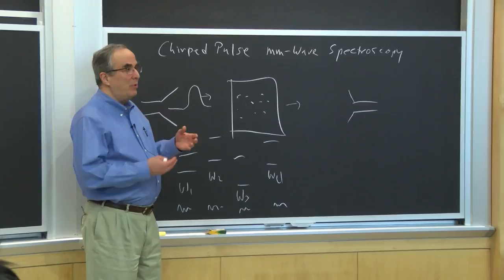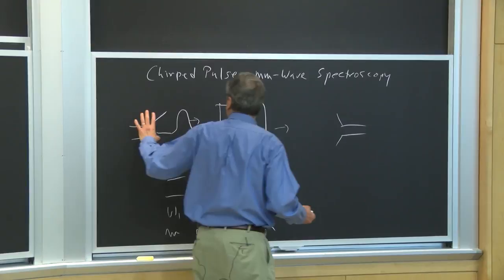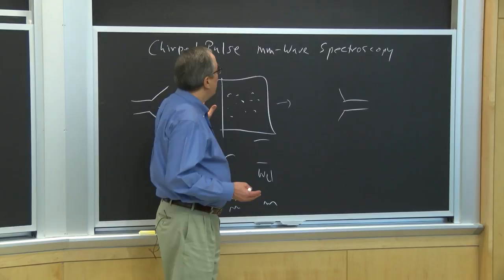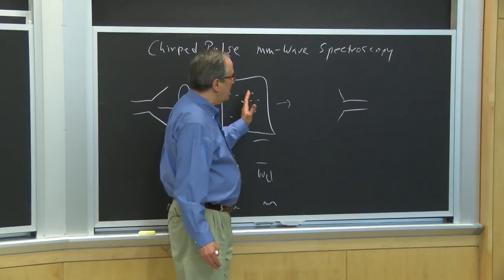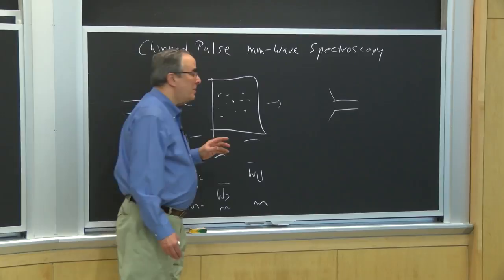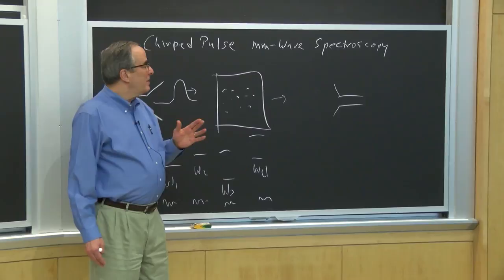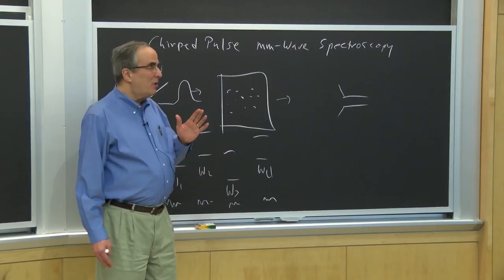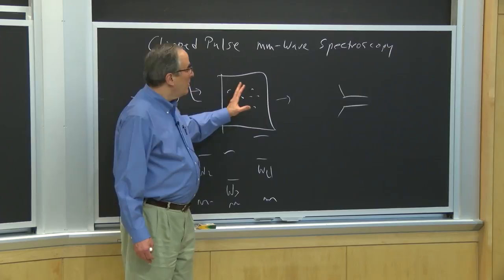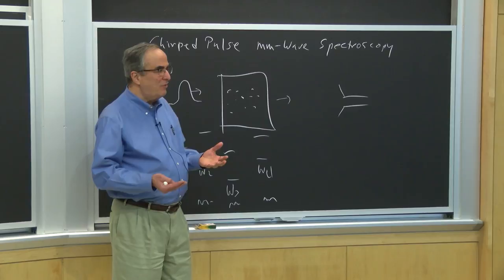This polarization relaxes by what we call free induction decay, and they produce a signal. We have a pulse of radiation that propagates through the sample. The two-level systems in the sample all get polarized, and they radiate that polarization. We collect it in a detector. So the two important things are: this is a time-dependent experiment, and we have a whole bunch of molecules interacting with the radiation in a complicated way.